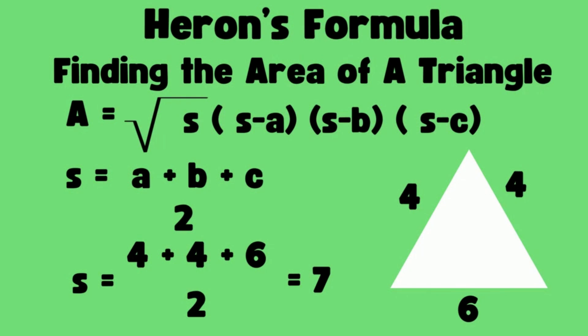Here is a video on how to find the area of a triangle using Heron's formula. The formula is A equals the square root of s times (s minus a), (s minus b), and (s minus c). You're going to multiply all those together and then take the square root of all that.